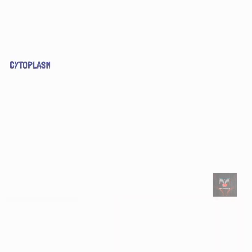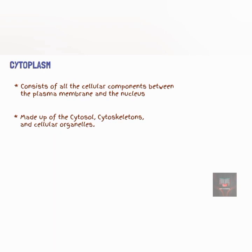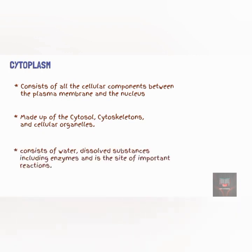The cytoplasm consists of all cellular content between the plasma membrane and the nucleus. It consists of the cytosol, the cytoskeleton, and the organelles. The cytosol, also called the intracellular fluid, is the fluid portion of the cytoplasm. It surrounds the organelles and constitutes about 55% of the total cell volume. It consists of water and dissolved substances, including enzymes that catalyze important chemical reactions in the body.